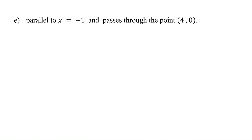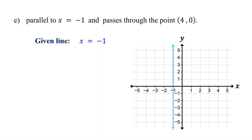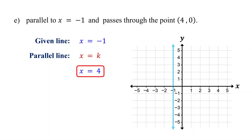What if the given line is vertical? The given line is x equals negative 1, which represents a vertical line crossing the x-axis at negative 1. A line parallel to this line must also be vertical, written as x equals k, where k is the x-coordinate of the given point. Here, the x-coordinate of the given point is 4, so k is 4. Therefore, the equation of the parallel line is x equals 4. If you graph this, the line crosses the x-axis at 4, passes through the given point 4 comma 0, and is parallel to the given line. In general, if the given line is in the form x equals a constant, the parallel line is x equals the x-coordinate of the given point.